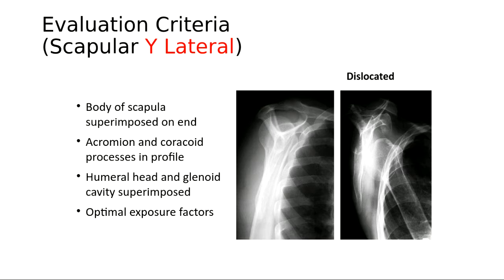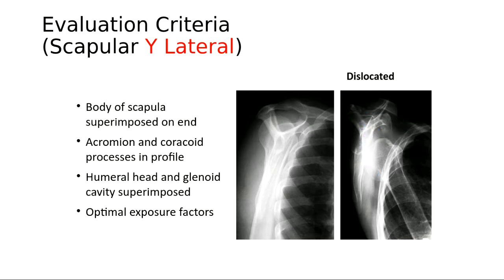On the normal Y view, the humeral head sits roughly in the center of the Y, with the Y formed by the acromion process, coracoid process, and body of the scapula. On the dislocated example, you see the acromion, coracoid, and base of the Y, but the humeral head is completely anteriorly dislocated — coming towards the body of the patient.